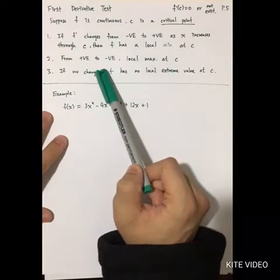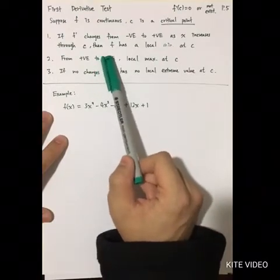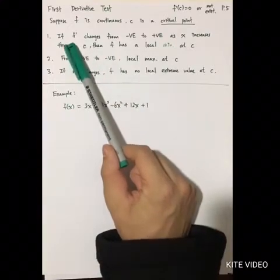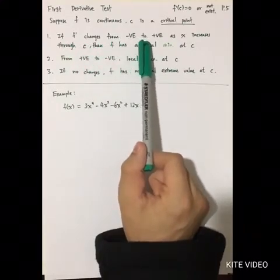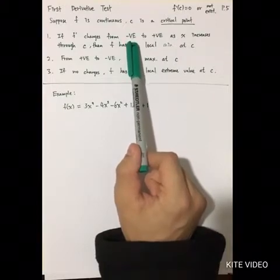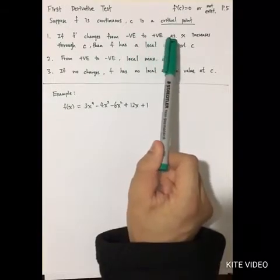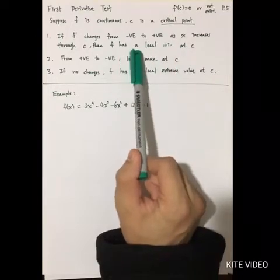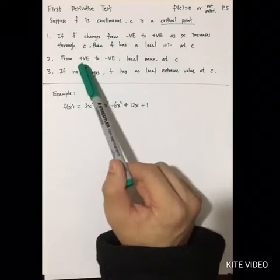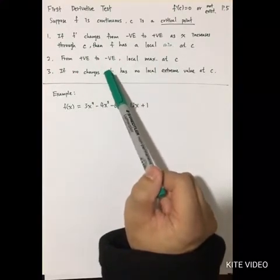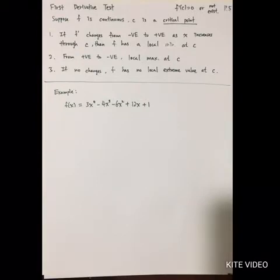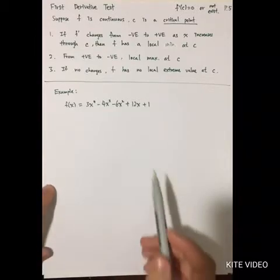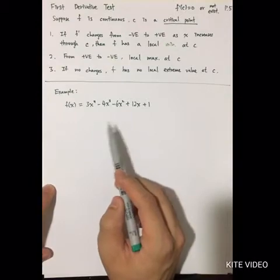Here are three properties of the first derivative test. First, if f prime changes from negative to positive, the function decreases before c and increases after, so f has a local minimum at c. If f prime changes from positive to negative, that is a local maximum at c. If there is no change in sign, there is neither a local maximum nor minimum.